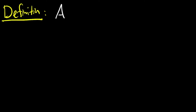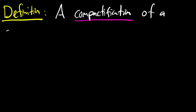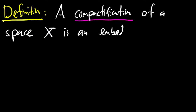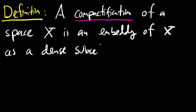Let's begin with the definition. A compactification of a space X is an embedding of X as a dense subset of a compact Hausdorff space.